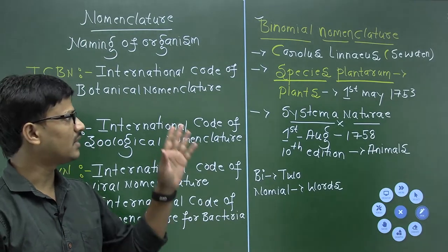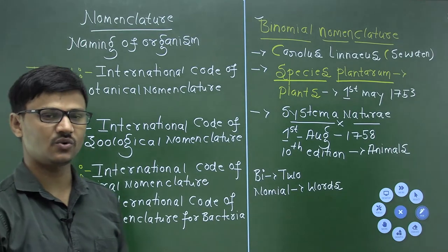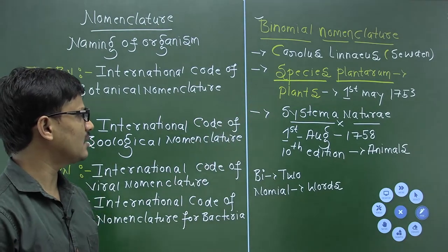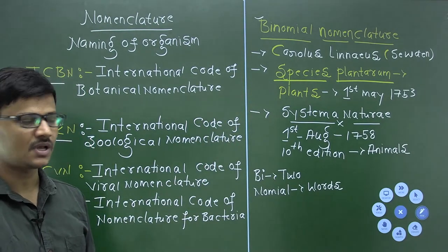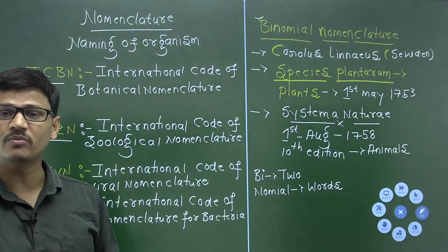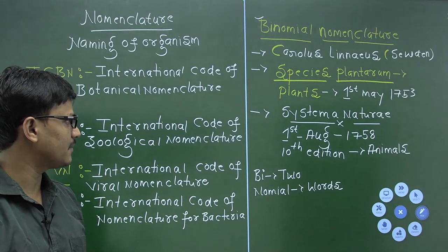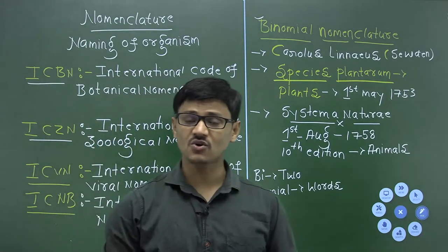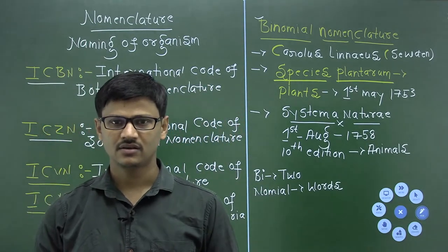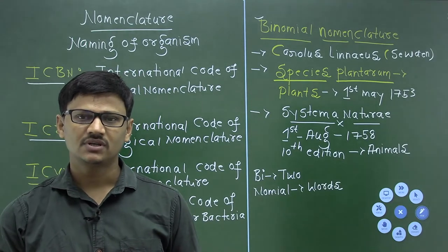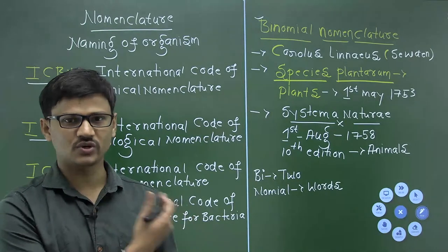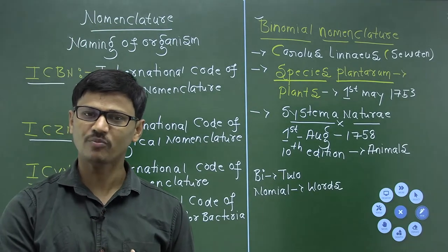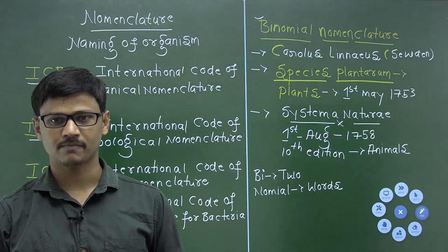Binomial nomenclature was first given by Carolus Linnaeus from Sweden. He explained binomial nomenclature of plants in Species Plantarum and binomial nomenclature of animals in Systema Naturae. It is also called binary nomenclature. Whenever naming a newly discovered organism, we must follow the set rules and regulations of binomial nomenclature.